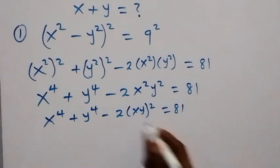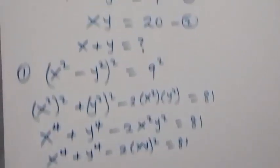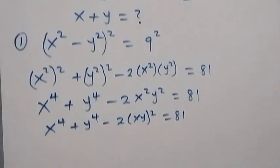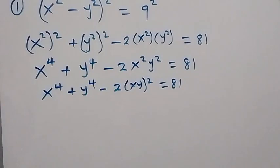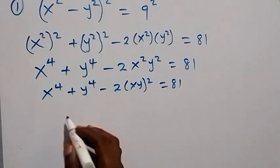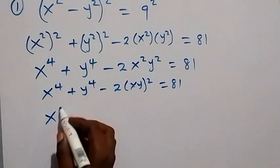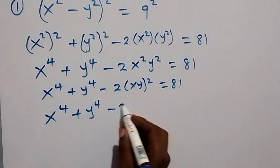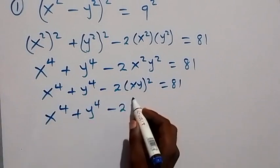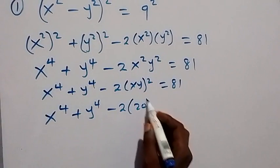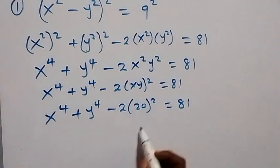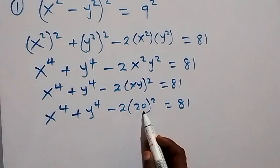From equation 2 we have xy equals 20, so we can substitute xy equals 20 here. This becomes x raised to power 4 plus y raised to power 4 minus 2 times 20 squared, which equals 81.